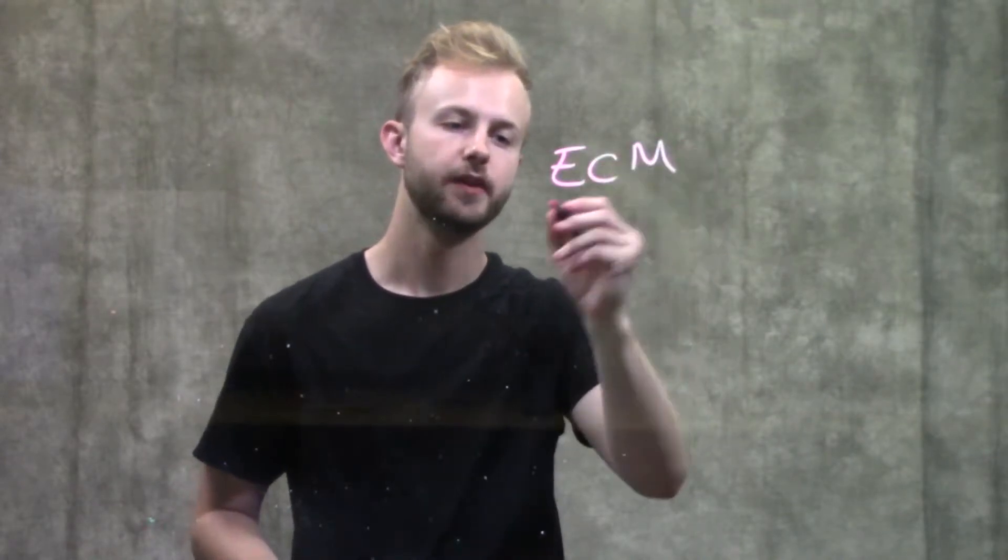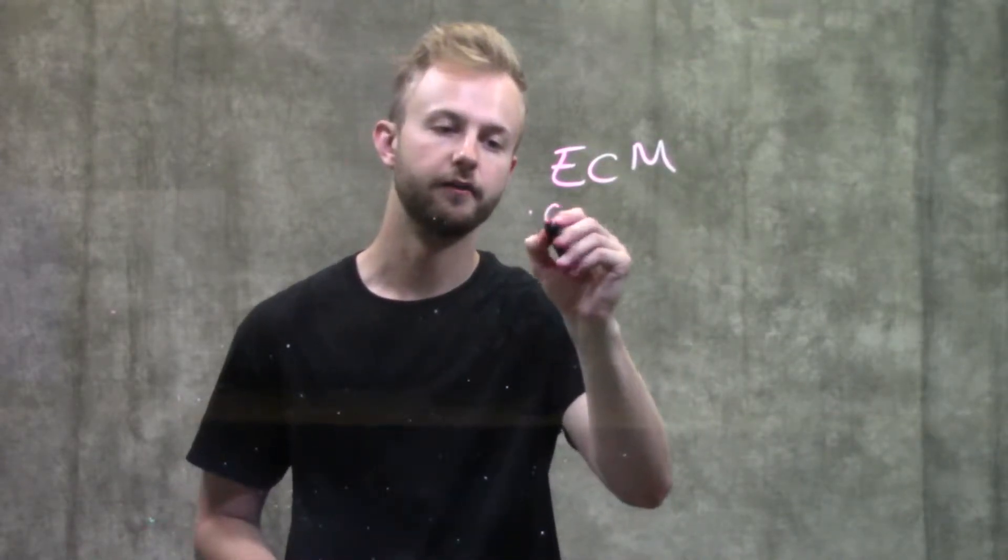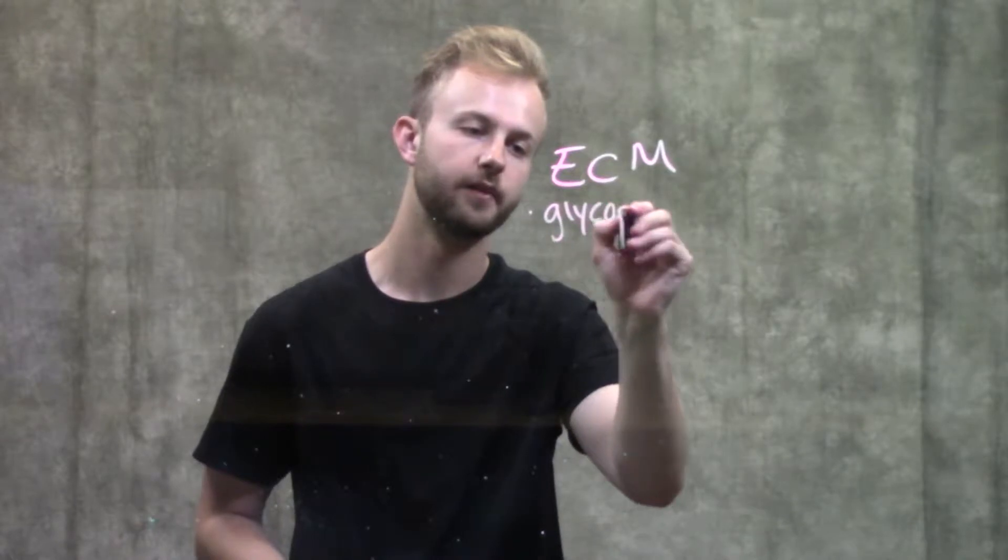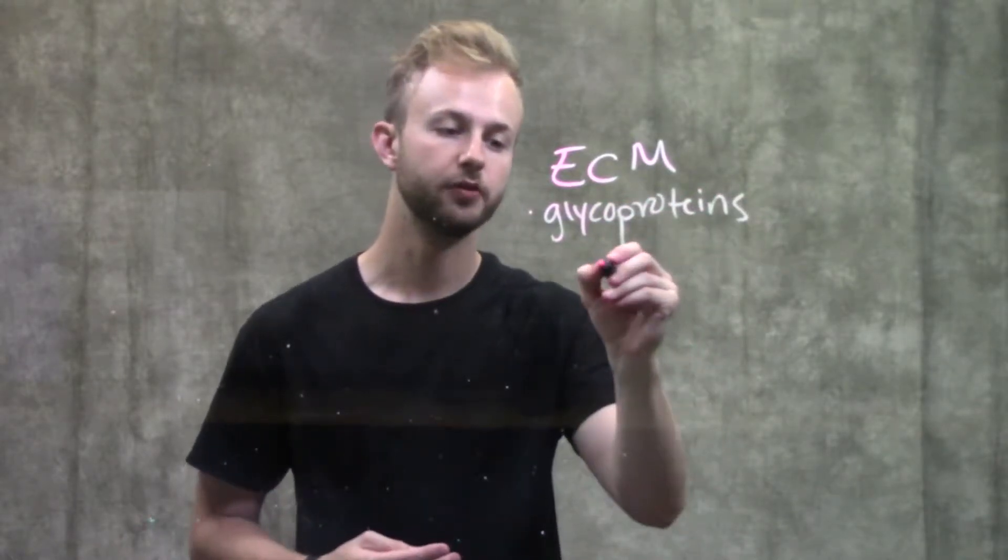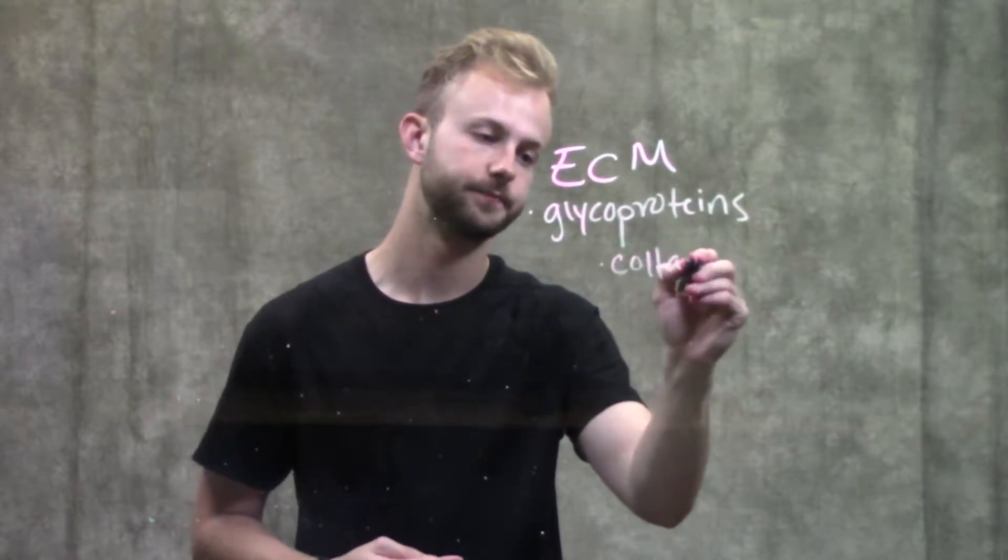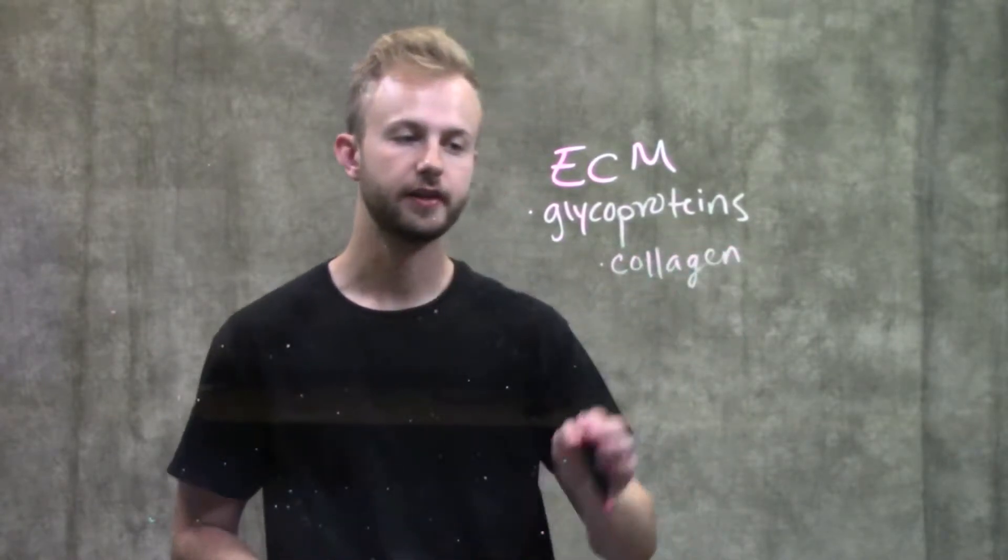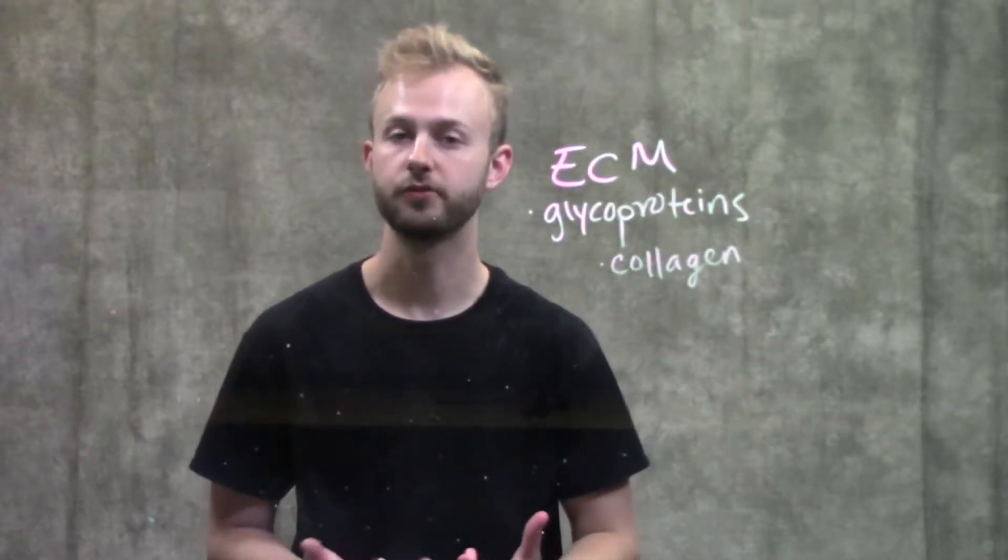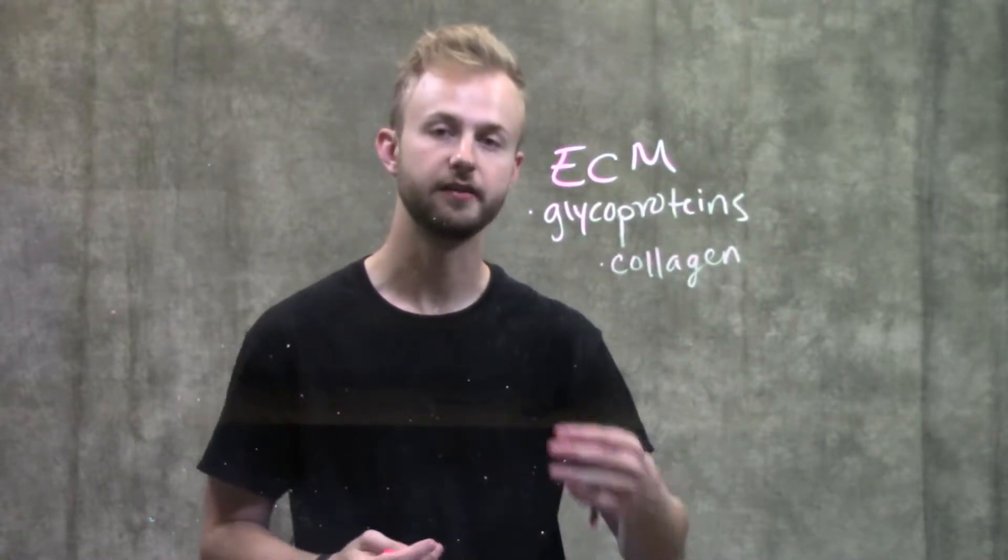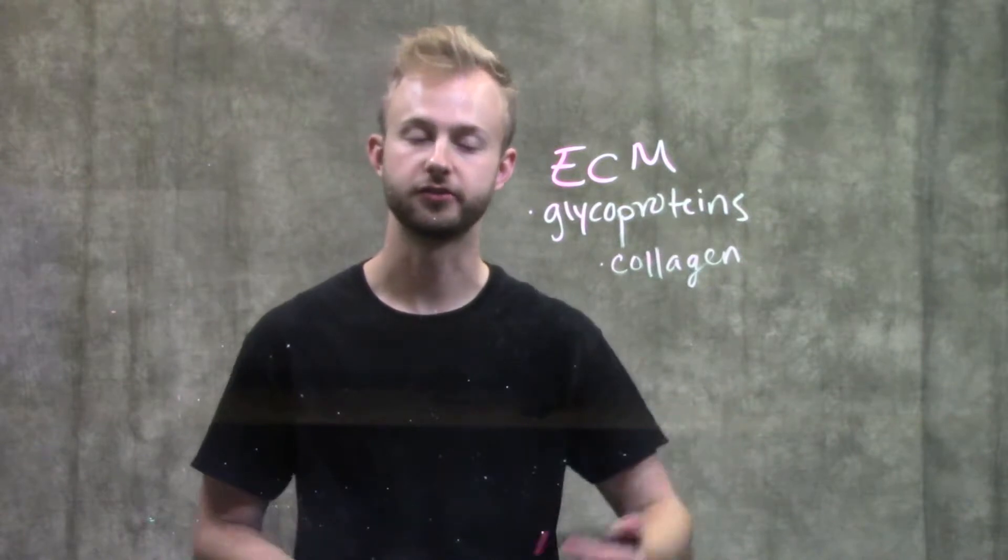The extracellular matrix, which we'll just call the ECM, is going to be mostly made up of glycoproteins. More specifically, it's going to be made up mostly of collagen. Collagen is a huge part of the extracellular matrix and it's actually the most abundant protein in our bodies because it's found all throughout the extracellular matrix.